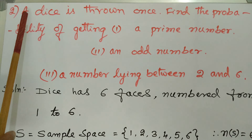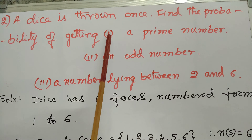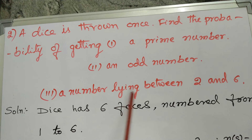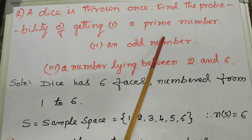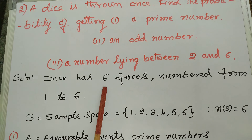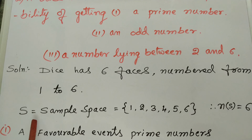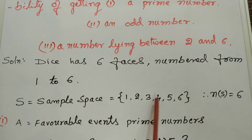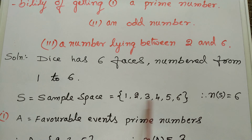Second problem: a dice is thrown once. Find the probability of getting — a prime number, an odd number, a number lying between 2 and 6. Solution: a dice has 6 faces, all numbered from 1 to 6. Therefore, sample space is {1, 2, 3, 4, 5, 6}, and n(S) = 6.